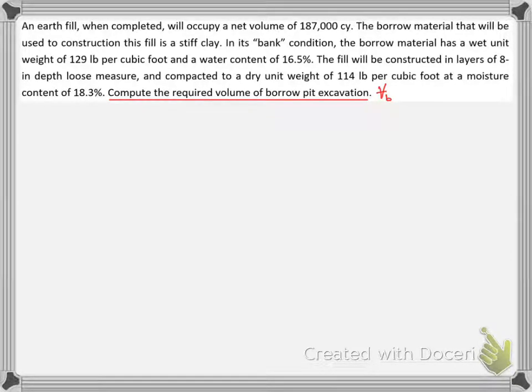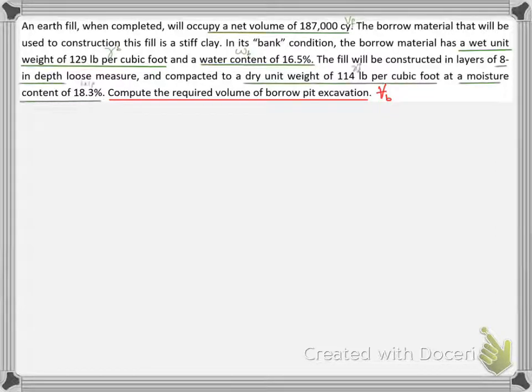In this exercise we need to calculate the volume of soil borrow needed for compacting a fill. We are given the fill volume and the required dry density of 114 pounds per cubic foot and the moisture content of 18.3 percent.